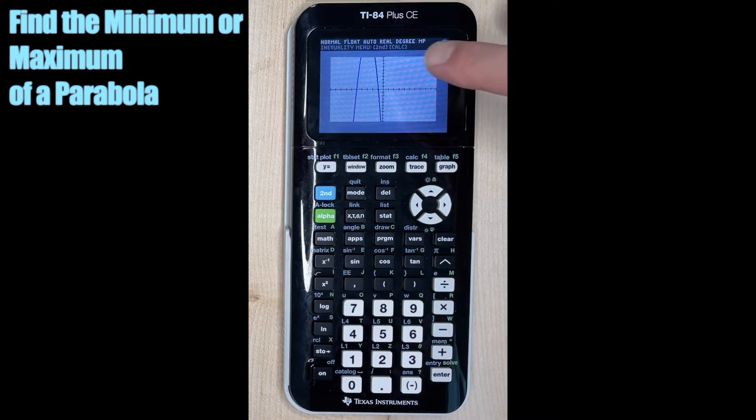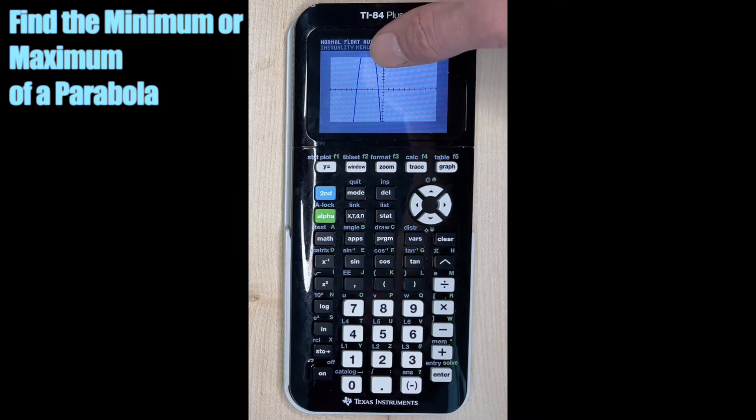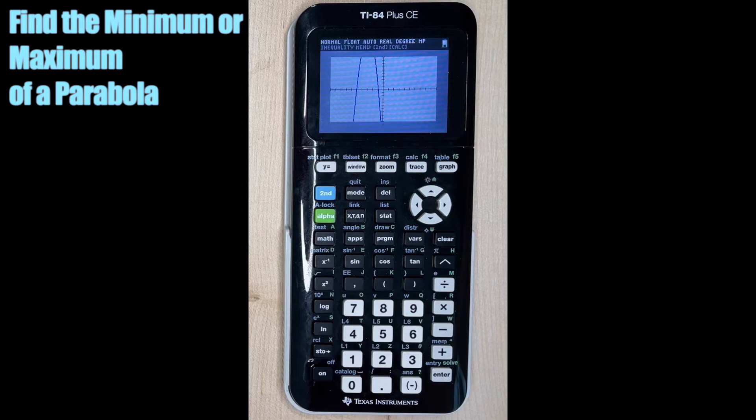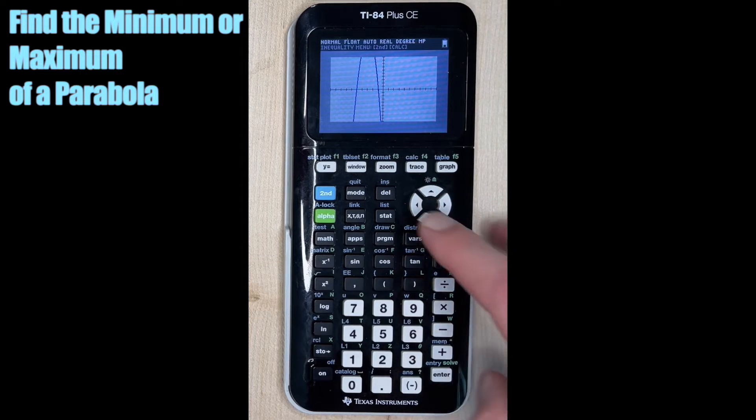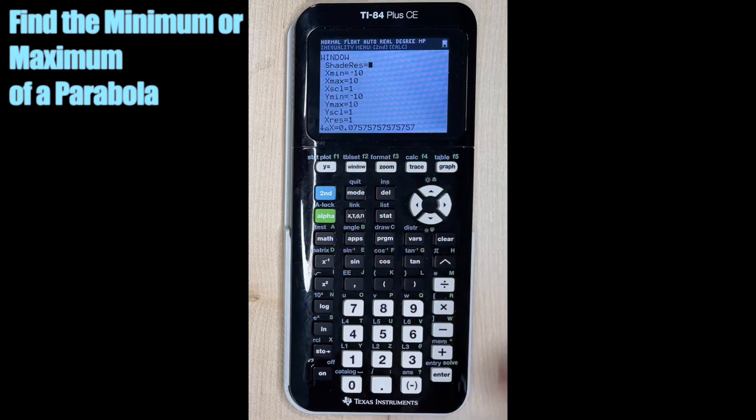All right. So look at what happens. We know that the maximum is the vertex of the parabola, but we can't really see it. So our calculator is not going to be able to tell it to us right now. So we need to adjust the window.